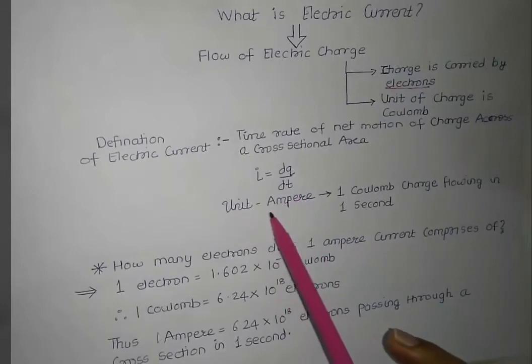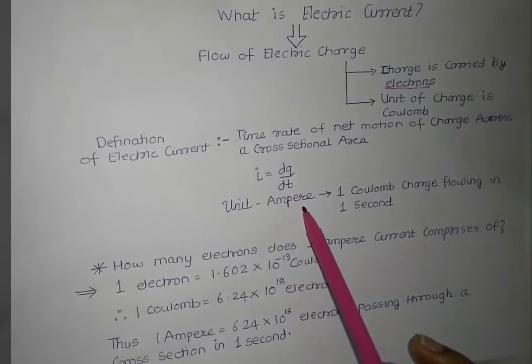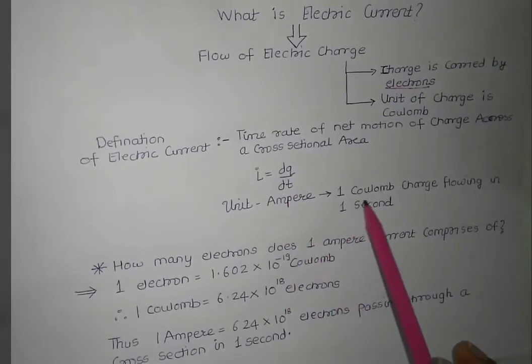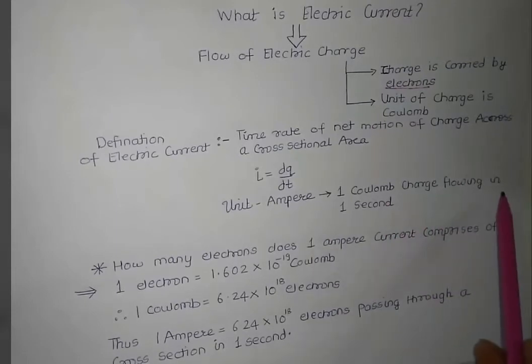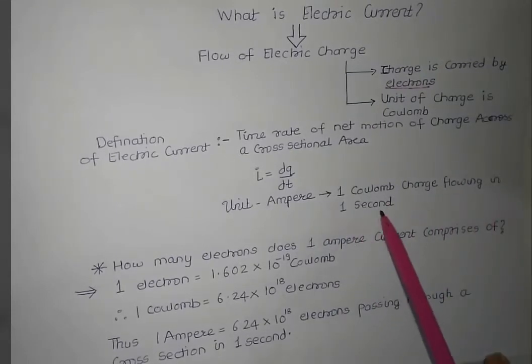The unit of electric current is ampere. We can define 1 ampere as 1 Coulomb charge flowing through a cross sectional area in 1 second.